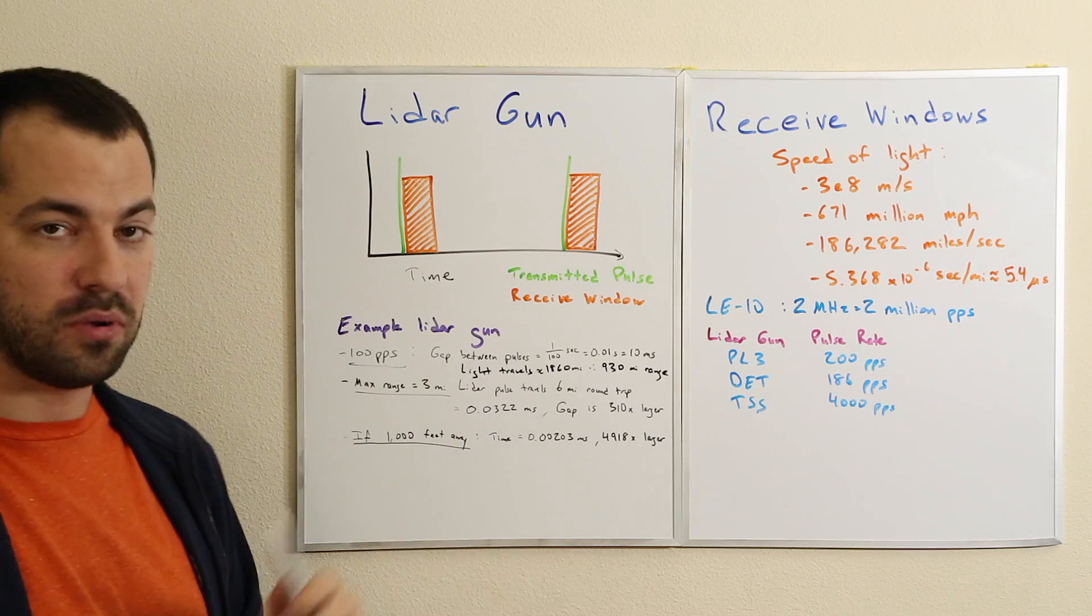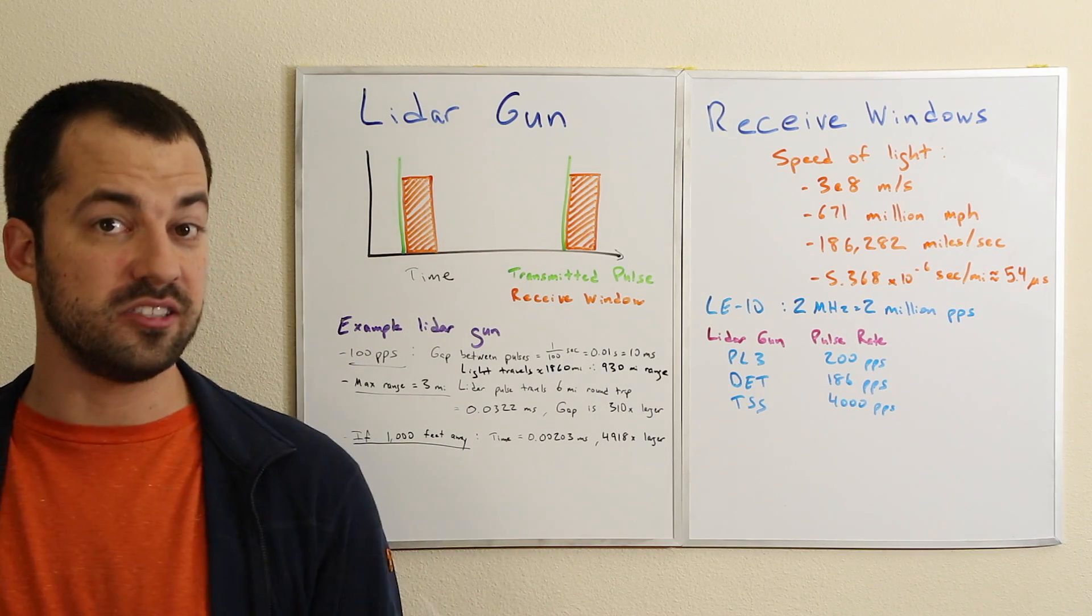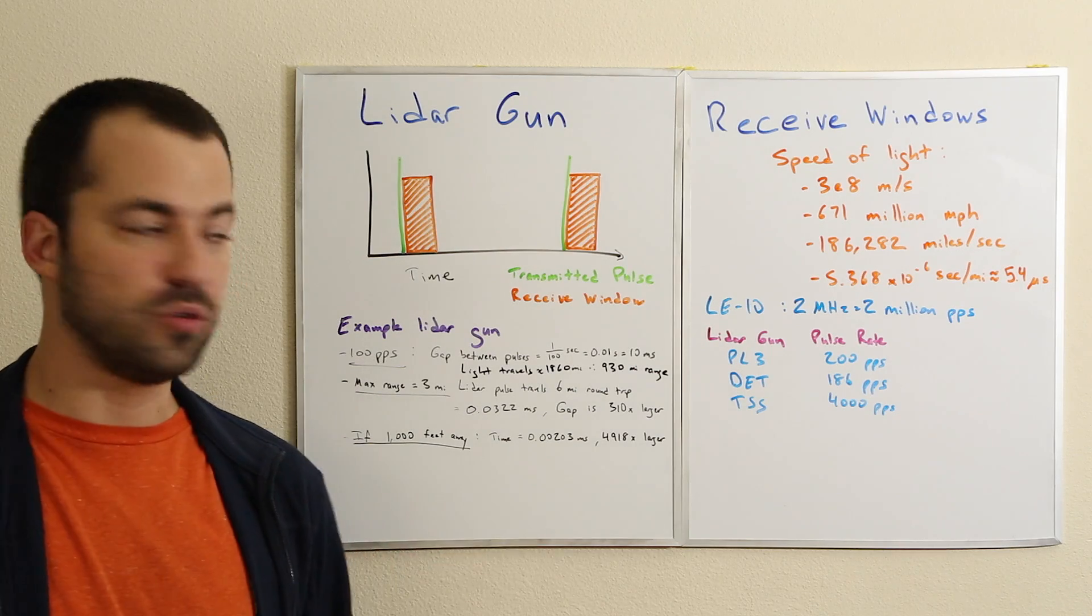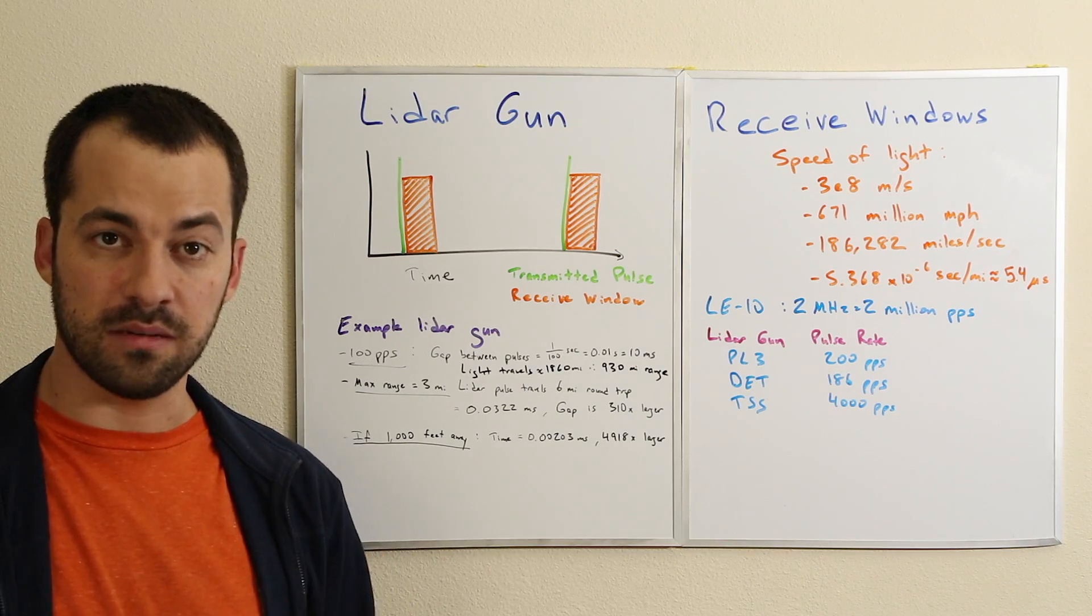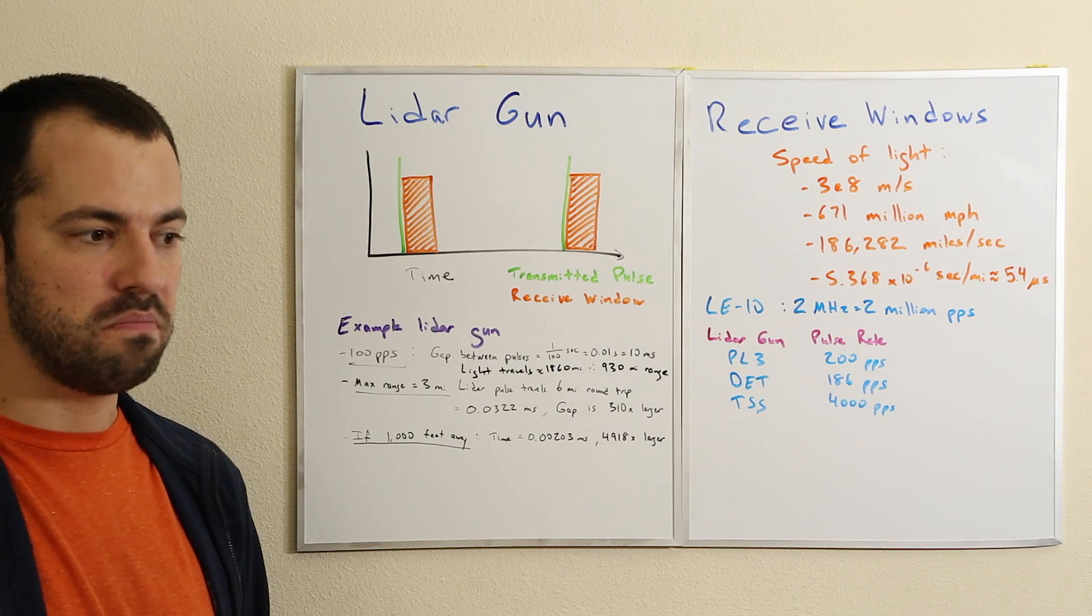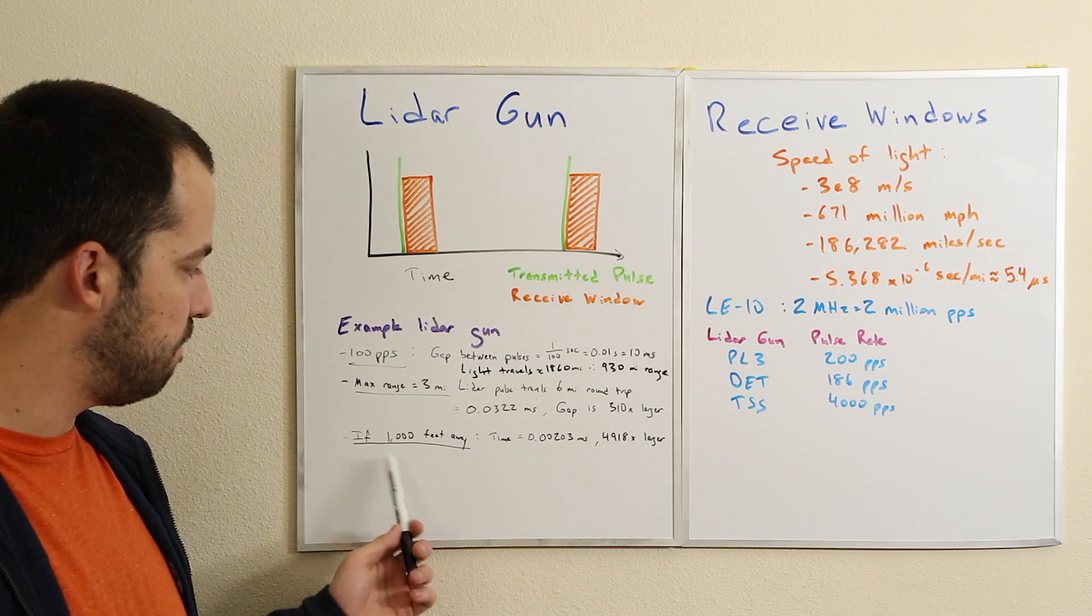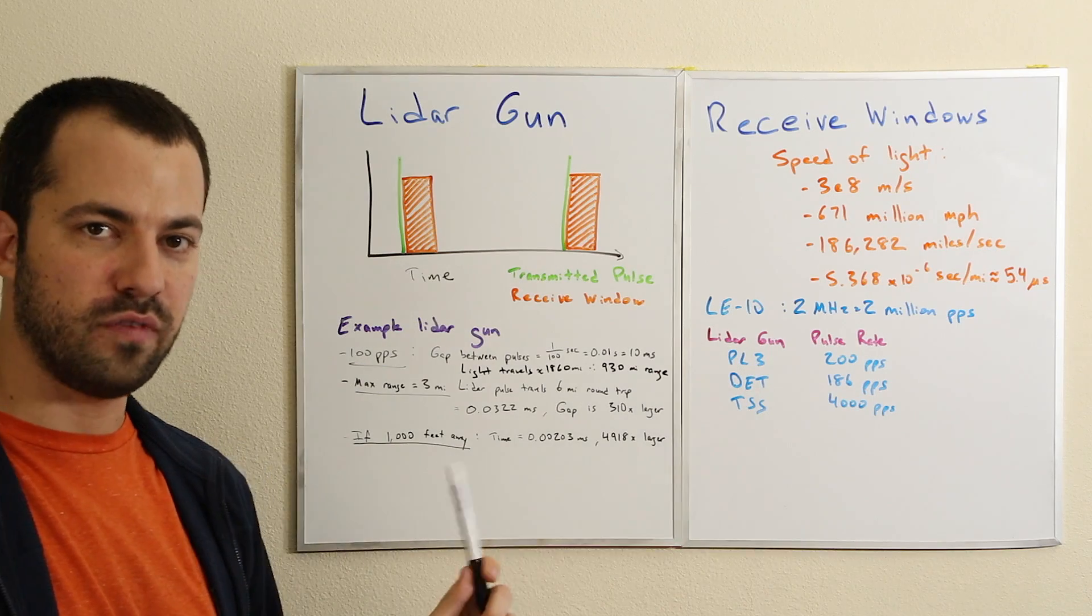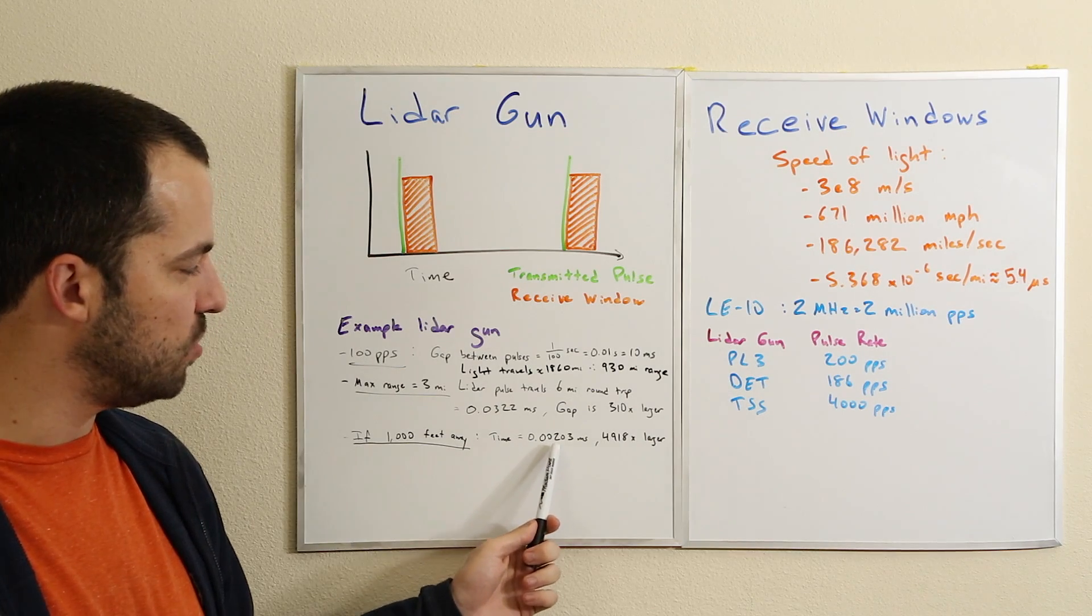What if we look at more realistic numbers? A lot of lidar guns have a maximum range listed at a mile. The TruSpeed S, for example, the maximum range listed in the manual is only 2,000 feet. When it comes to the laws, some places state that due to the beam spread of the lidar beam, the maximum range may be only 1,000 feet or 1,500 feet - that's the longest police officers are allowed to issue tickets. A more typical number you may see in practice is 1,000 feet away. At 1,000 feet, our pulse has to travel 2,000 feet round trip. That 2,000 foot round trip time of flight takes 0.00203 milliseconds or about 2 microseconds.